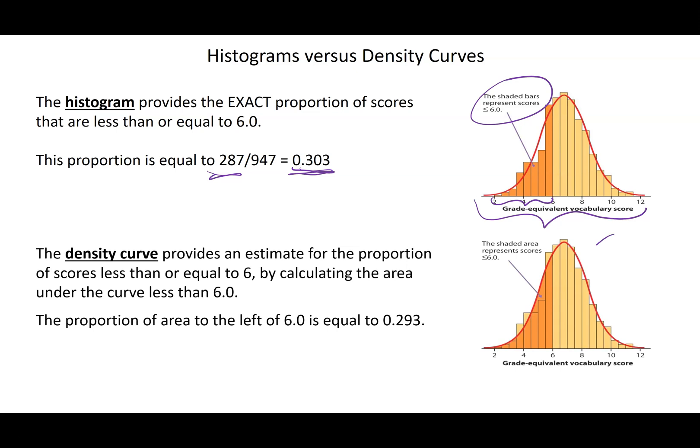However, if we use the density curve instead, so instead we fit to this red density curve, and we go at 6 or less. The probability we end up getting there, so it's an approximation, is about 0.293. These two, they're pretty similar.